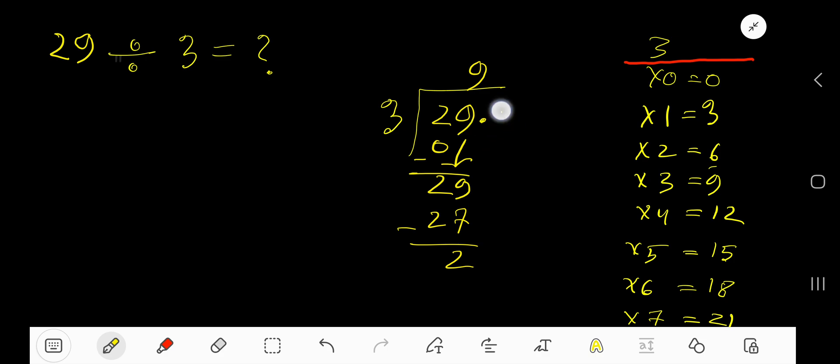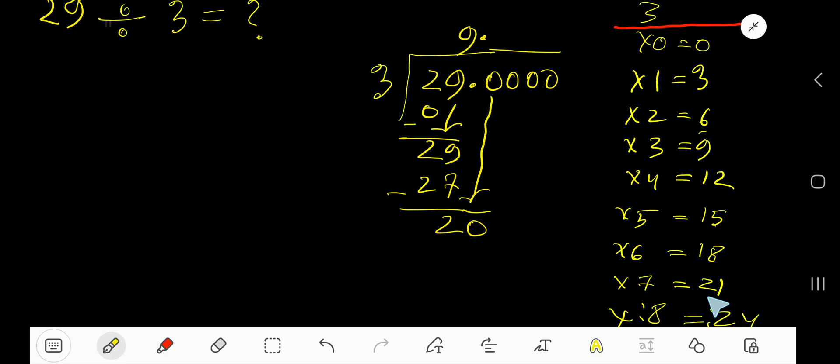If you want to write your answer in decimal form, then convert this whole number into a decimal number and then bring down the first 0. 3 goes into 20 how many times? 7 times 21, which is greater, so 6 times. Write 6. 6 times 3 is 18. Subtract 2.